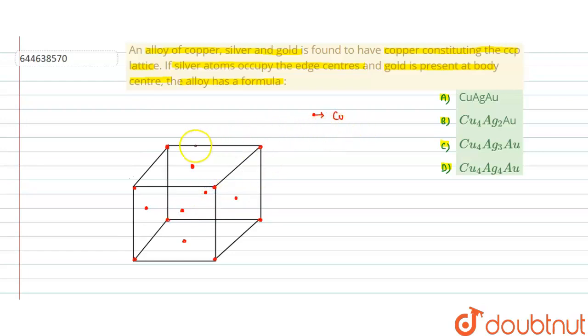So how many atoms? We know the calculation part. This copper atom: all the corners have 1/8th part into total atoms is 8, plus these 6 atoms at face centers have half part into 6. So the value is equal to 4.